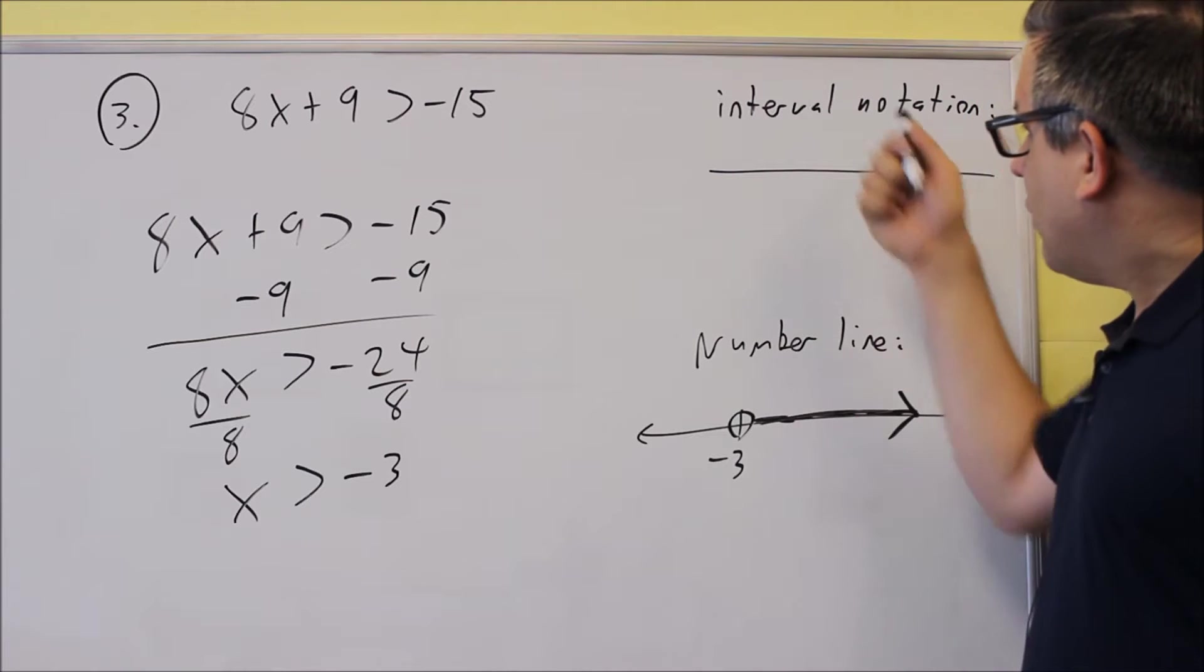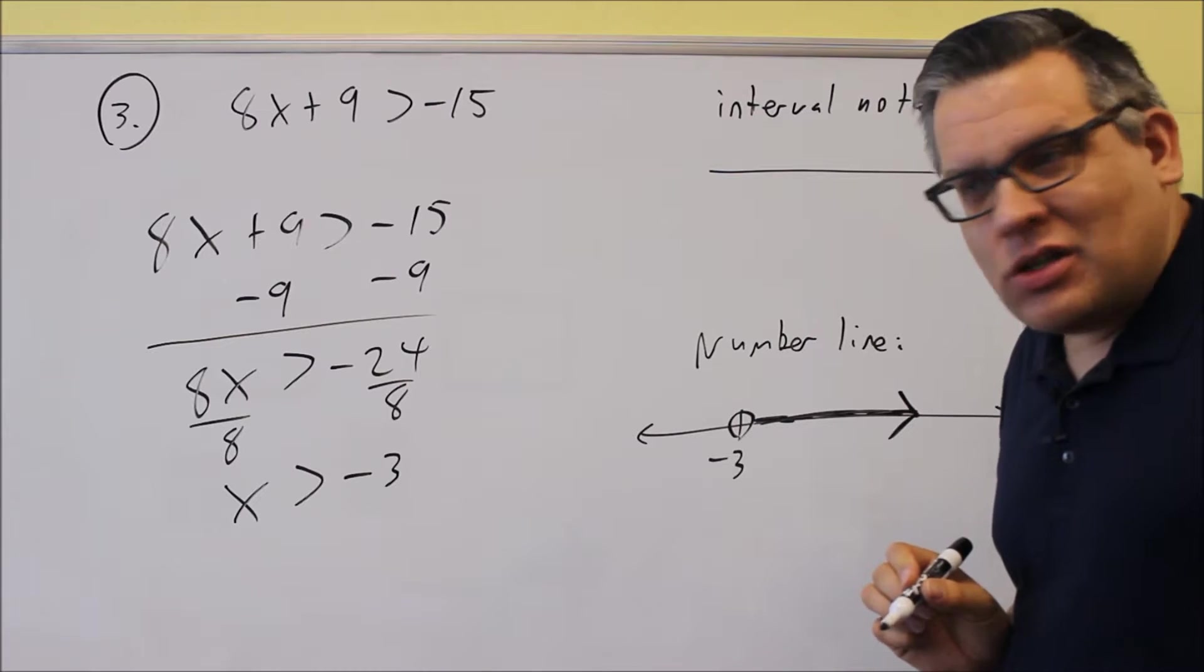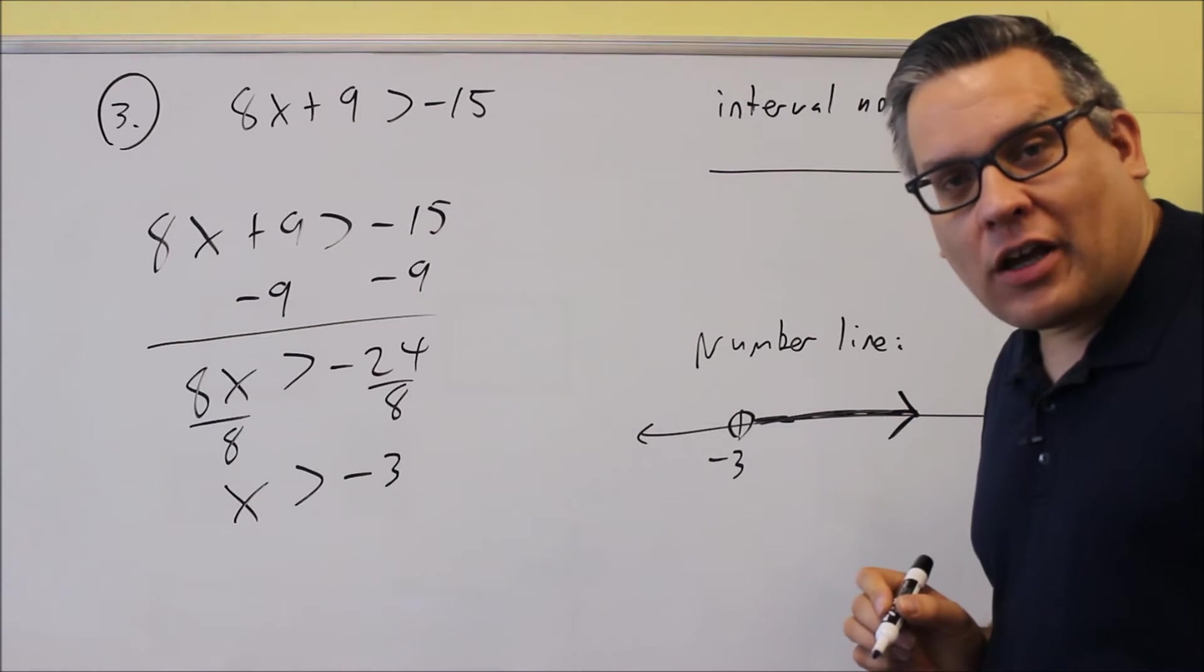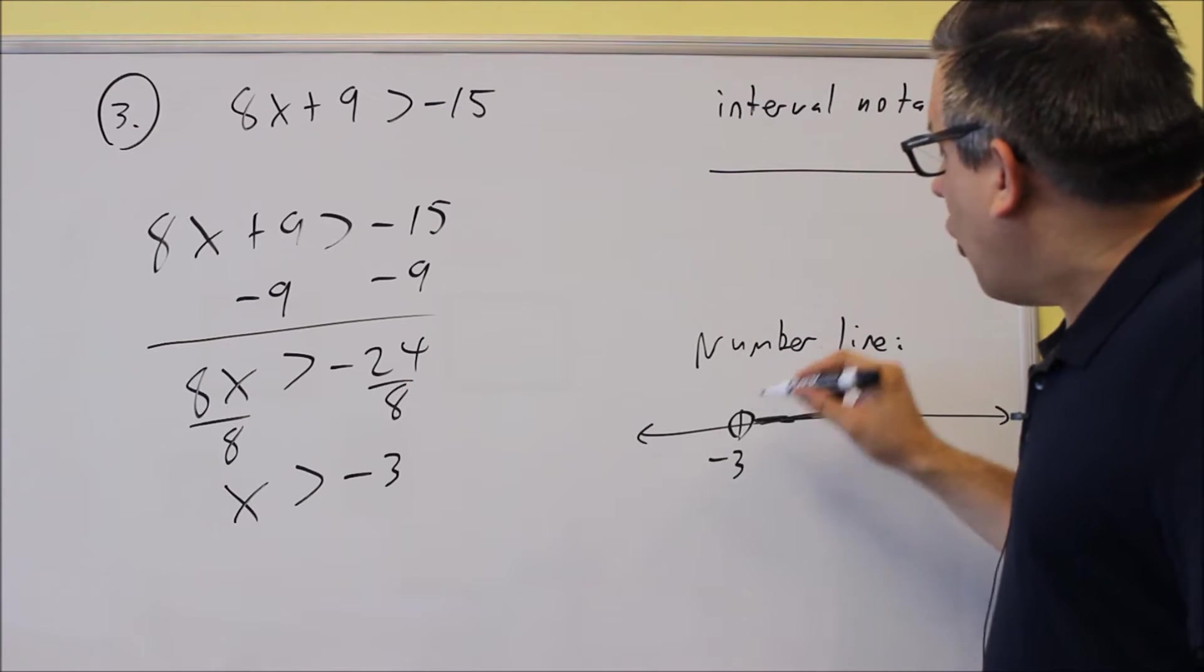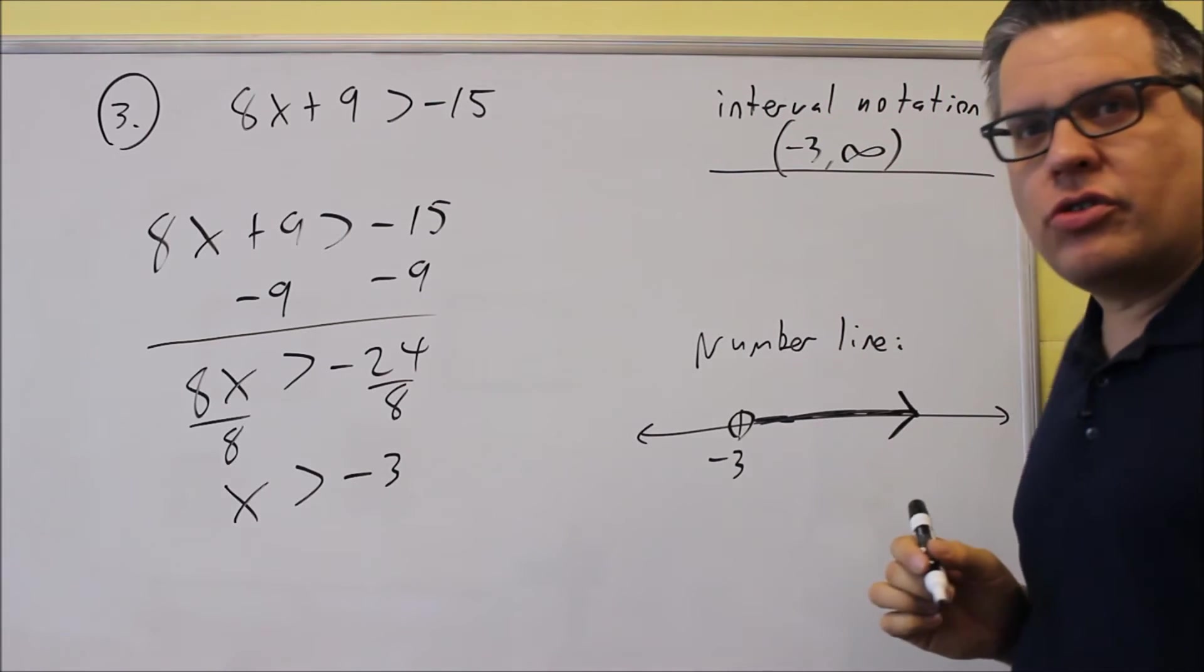Now, from this, I need to convert this over into interval notation. If I have an open circle, I'm going to use parenthesis. If I have a closed circle, I'm going to use brackets. So this one's an open circle, which means I'm going to put a parenthesis. I'm going to put negative 3 on there, and then I'm going to have it go to infinity.